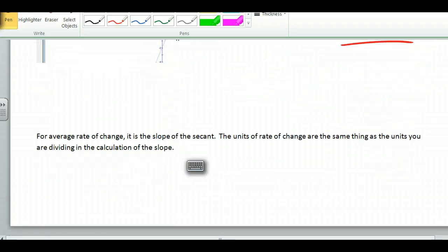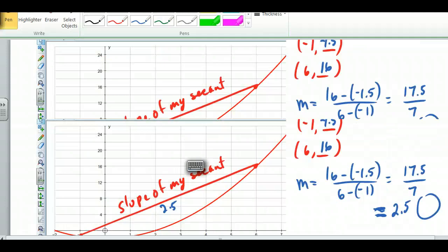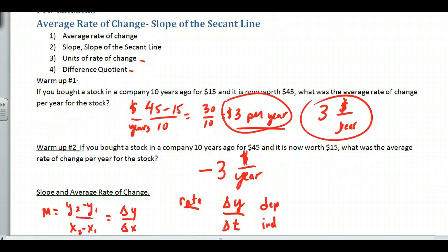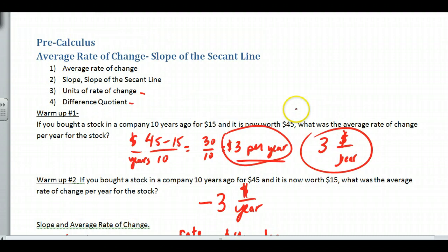Okay, let's summarize a little bit what we've done. For average rate of change, it's the slope of the secant line. The units of the rate of change are the same thing as the units you are dividing in the calculation of the slope. So if it's meters per second, or if it's dollars per year, so on, those would be the units that you would be dealing with. All right, I hope that this gives you a good introduction of average rate of change. I think it's very applicable to a lot of things that we do. So I hope that you'll be using this. Well, I know you'll be using it in calculus. Thank you very much. Have a good day.